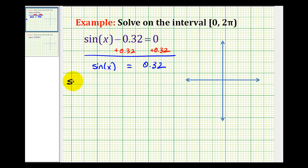If we take inverse sine on both sides of the equation, the left side simplifies to our angle x and the right side we have inverse sine zero point three two.